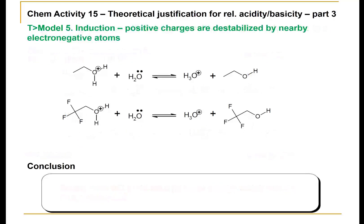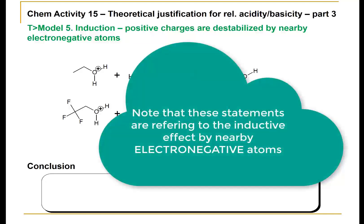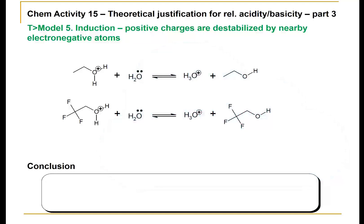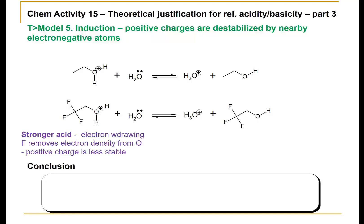Moving forward, we can look at the effect of induction. Many students get this effect mixed up, because we often associate induction with stabilization of a charge. The inductive effect — pulling electron density along sigma bonds — will stabilize a negative charge because we have an excess of electron density. However, if we have a deficiency in electron density, induction does not stabilize. Comparing these two conjugate acids, both show a protonated oxygen. However, in the bottom case, we have electron-withdrawing fluorine groups. This will make the positive charge less stable, so a stronger acid will be this conjugate acid at the bottom. Electron-withdrawing fluorine removes electron density from the oxygen; the positive charge is less stable, making it a stronger acid. Correspondingly, the protonated alcohol will be the weaker acid, and the alcohol itself will be the stronger conjugate base.